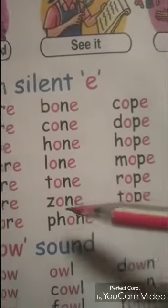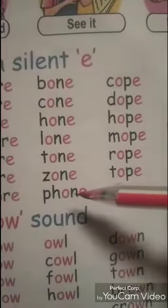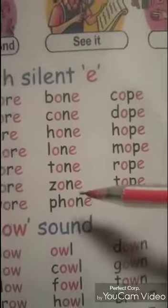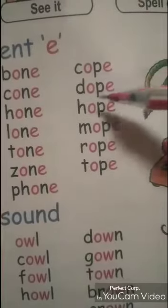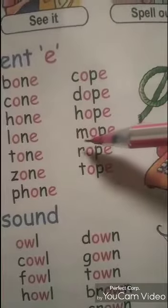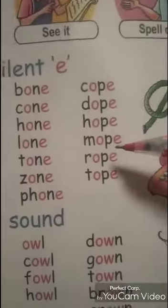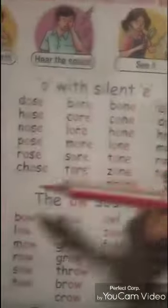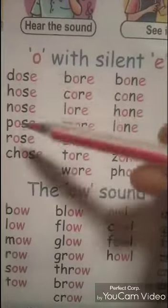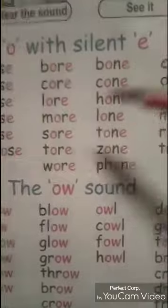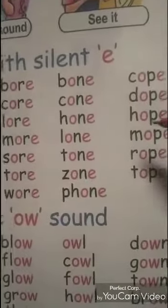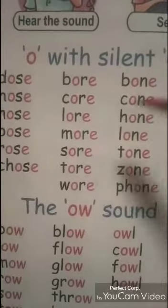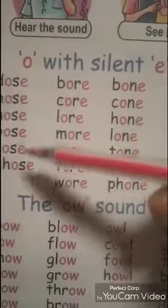T-O-N-E, Tone. Z-O-N-E, Zone. P-H-O-N-E, Phone. C-O-P-E, Cope. D-O-P-E, Dope. H-O-P-E, Hope. M-O-P-E, Mope. R-O-P-E, Rope. There are four types of rhyming words. In every word you can see, read, and understand, my dear students — in every word, O sounds but E is silent.